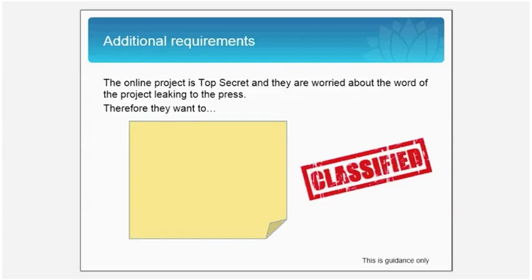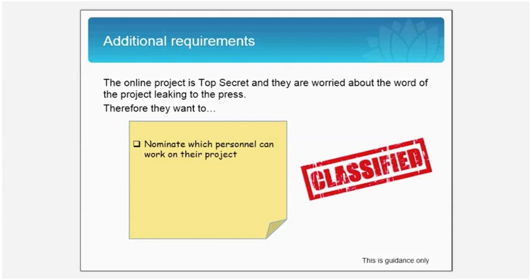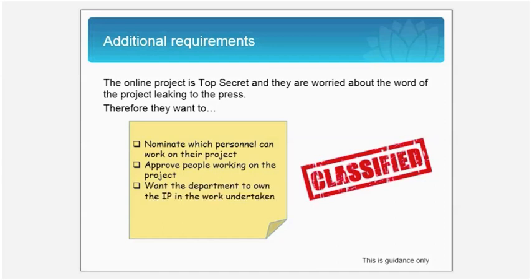There are a few peculiarities to the project. This project is classified and the department is worried about news of the project leaking to the press. To keep everything under wraps, they want to nominate which personnel can work on this project, approve the people working on the project, and they want the department to own the IP in the work undertaken.